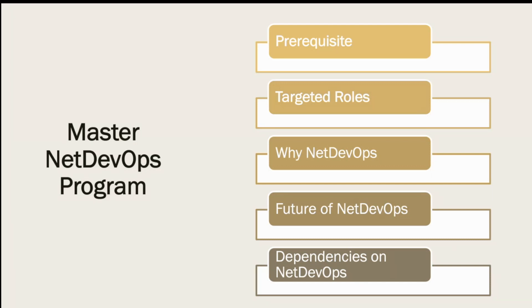Now, why Net DevOps? What exactly is this Net DevOps story? Net DevOps is basically your legacy network combined with automation along with DevOps. Network automation is quite common these days — everyone is talking about it — and to match our pace with the industry, we have to learn it.